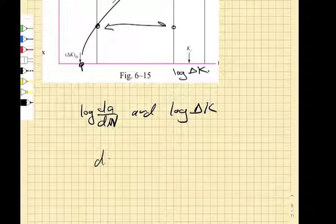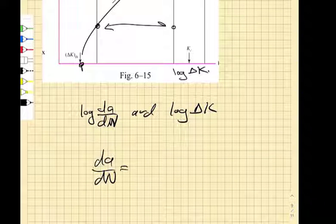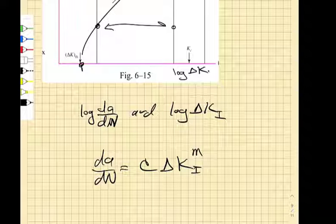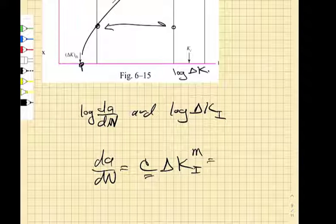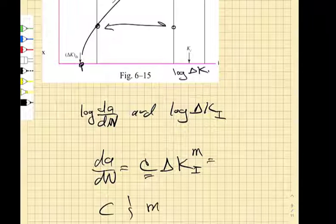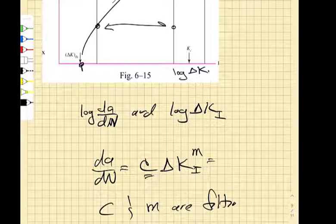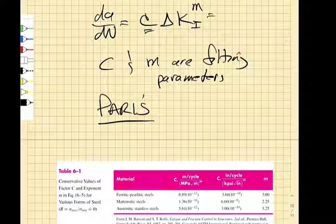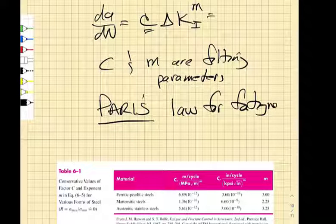So between these crack sizes in here, we get this stable crack growth and we can define a nice relationship between log dA, dN and log delta K. And that is that dA, dN is equal to C delta K to the M. And we're going to just deal with mode one stress intensity factors. These are fitting parameters. C and M are fitting parameters. This is called the Paris law for fatigue, named after a person named Paul Paris, not for the city in France.